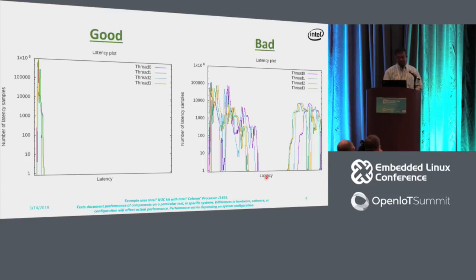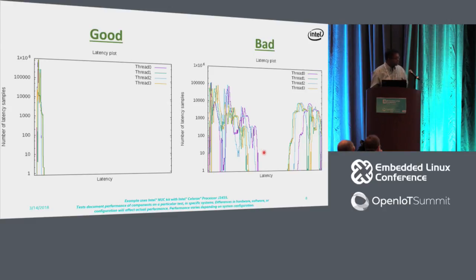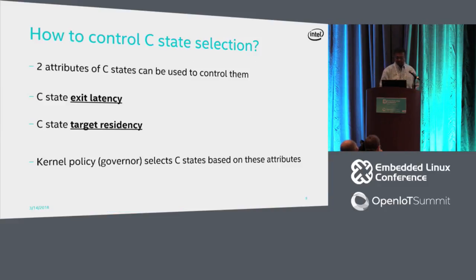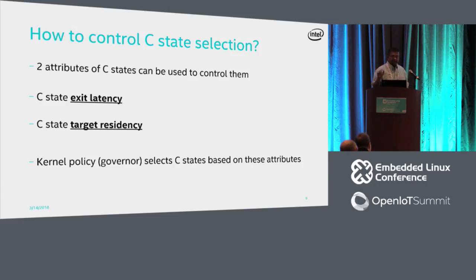When we reach critical phases, we don't want deep C-state jitter to happen. Deep C-states are in play causing the problem, so one obvious solution is to block deep C-states at critical phases. That means we need a way to dynamically control C-state selection.